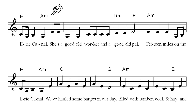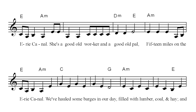We are on the second line — 'She is a good old worker.' And then it goes to D minor, then E, and then back to A minor again, E and A minor.